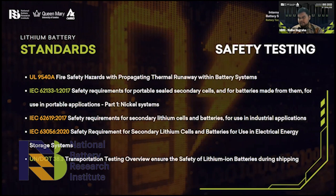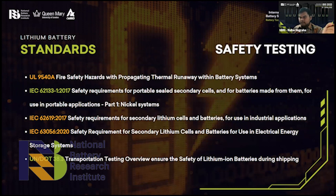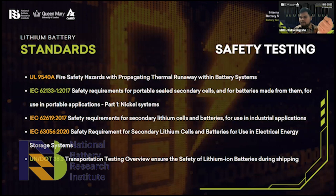For safety testing, UL 9540 covers safety hazards with propagating thermal runaway within battery systems. IEC 62133-1 year 2017 regulates safety requirements for nickel battery cells. IEC 62619 year 2017 covers safety requirements for secondary cells and batteries for industrial applications. So the applicable standard depends on what your final product is — whether it is for industrial use, electric vehicles, or portable applications — each has different standards.